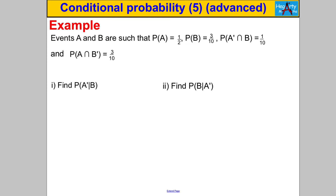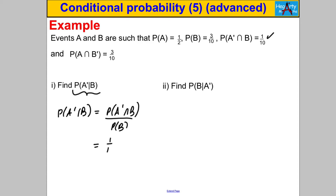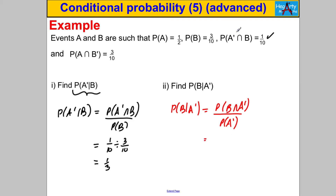Question 3: find P(not A|B) and P(B|not A). For P(not A|B), the formula gives P(not A ∩ B) / P(B) = (1/10) ÷ (3/10) = 1/3. For P(B|not A), we need P(B ∩ not A) / P(not A). P(not A) = 1 − 1/2 = 1/2, so we get (1/10) ÷ (1/2) = 2/10 = 1/5.